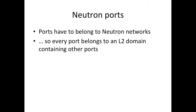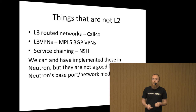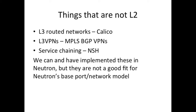Neutron ports belong to Neutron networks — there's no option for them not to. So every bit of forwarding that happens between virtual machines happens on a layer two domain. If you want to do anything else, like layer three routed networks — the Calico project is one example of a group of people who'd like to do that — or MPLS BGP VPNs, which give you capabilities to bring individual interfaces from virtual machines into a VPN that does layer three forwarding, or if you're doing service chaining using something like NSH, where traffic is routed by your choice of how services are chained together and not by the layer two domain.